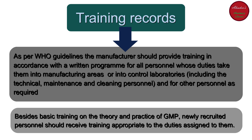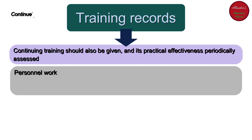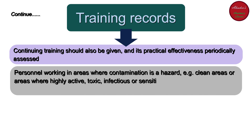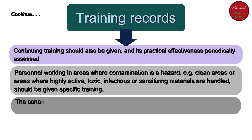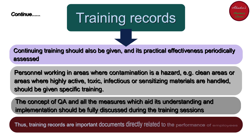Continuing training should also be given and its practical effectiveness periodically assessed. Personnel working in areas where contamination is a hazard — for example, cleaning areas or areas where highly active, toxic, infectious, or sensitizing materials are handled — should be given specific training. The concept of quality assurance and all measures which aid its understanding and implementation should be fully discussed during training sessions.